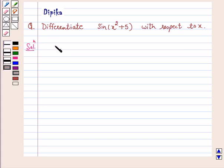Let y equal sin(x² + 5). Therefore, dy/dx is equal to d/dx of sin(x² + 5).